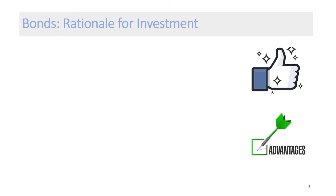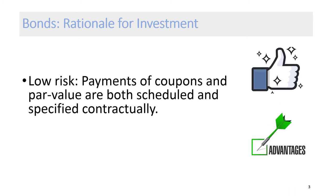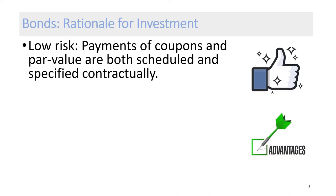What is the rationale for bond investment? What are the advantages enjoyed by bondholders? Bond has lower risk than common stock. Payments of coupon and par value are both scheduled and specified contractually. Bonds provide a predictable and more stable income stream, so bondholders know exactly how much money they will be paid and when. Bonds are generally viewed as safer investments than stocks. Historically, the bond market has been less vulnerable to price swings or volatility than the stock market.